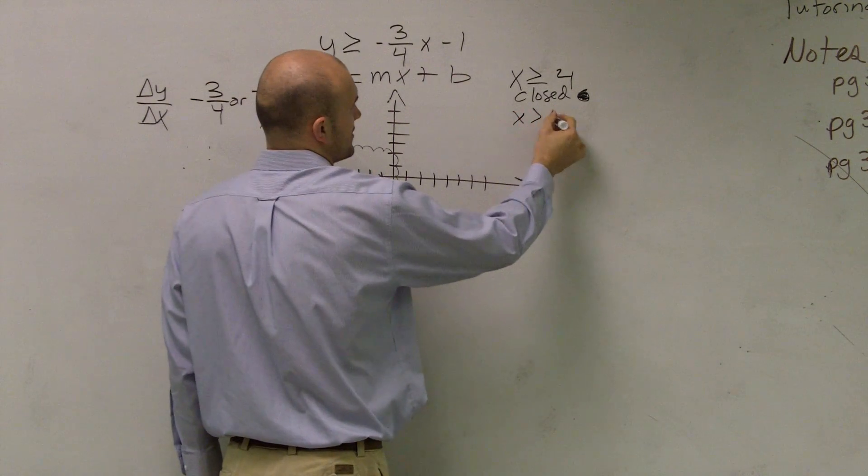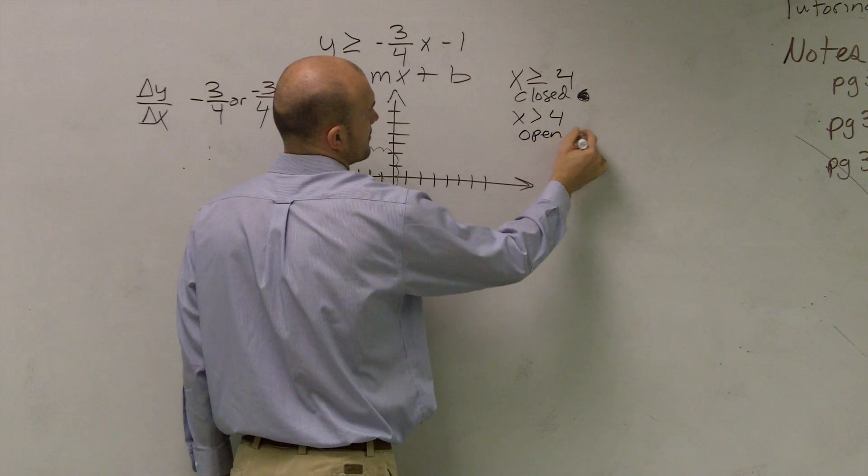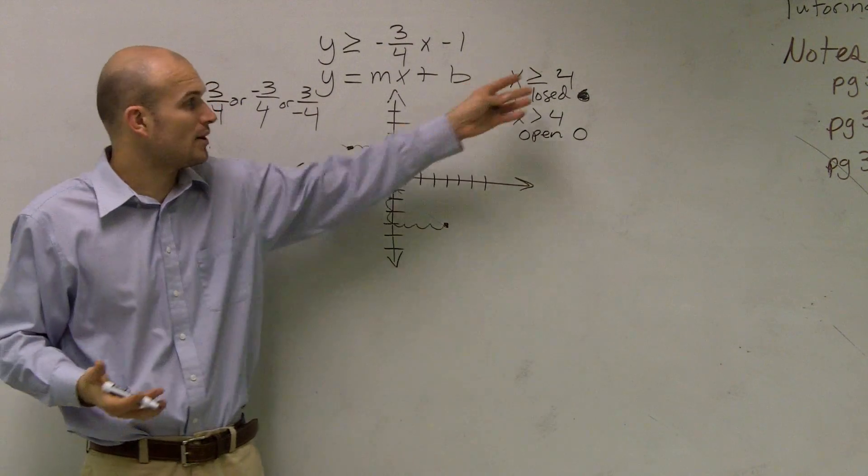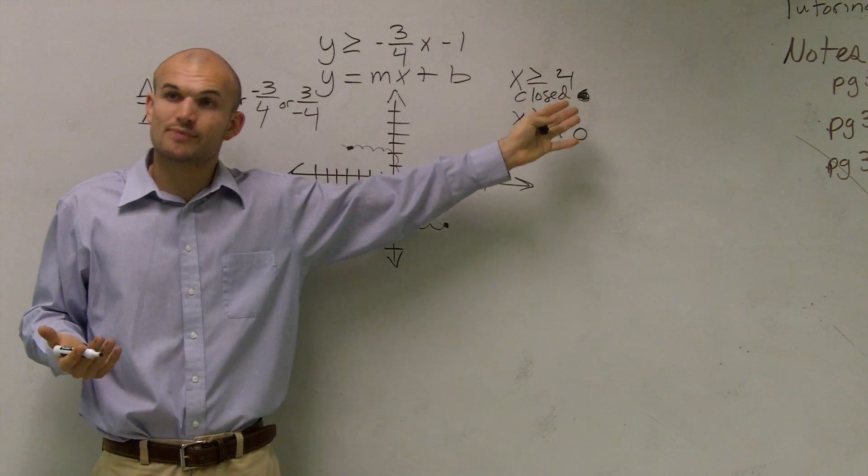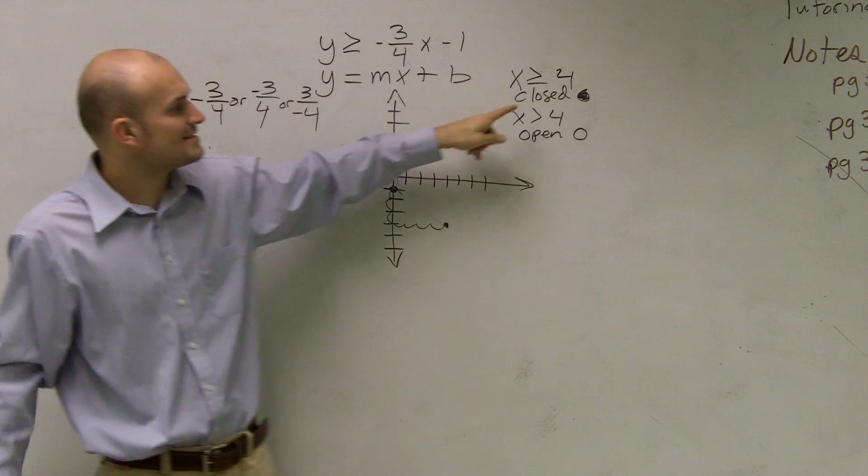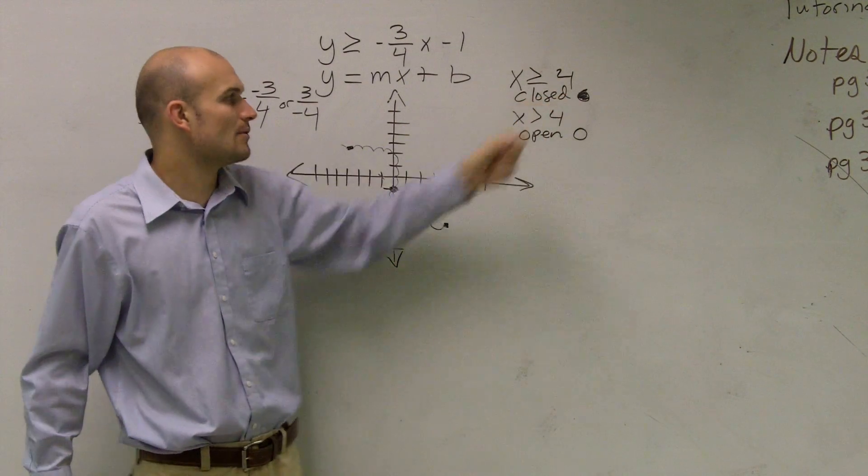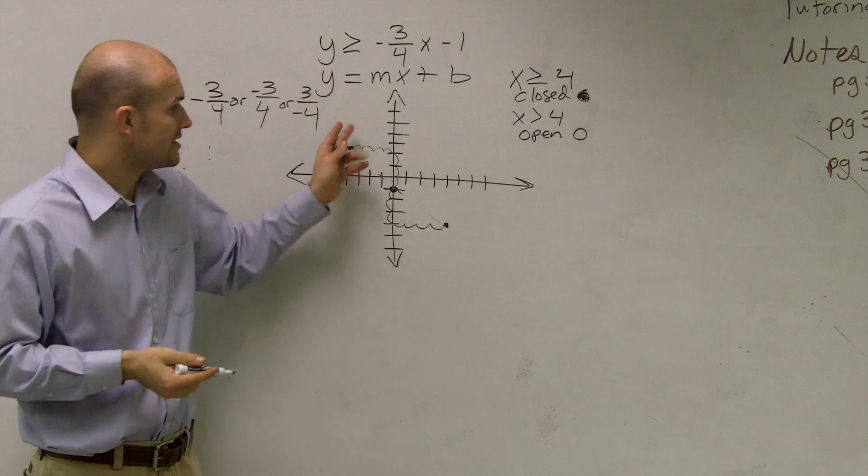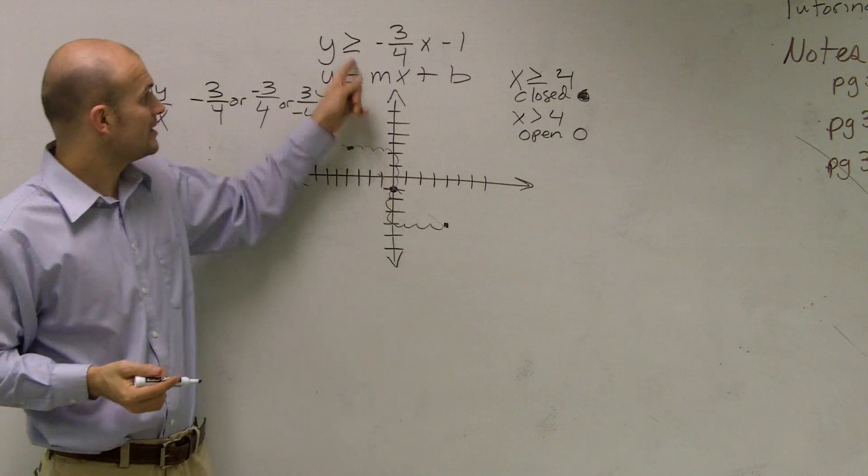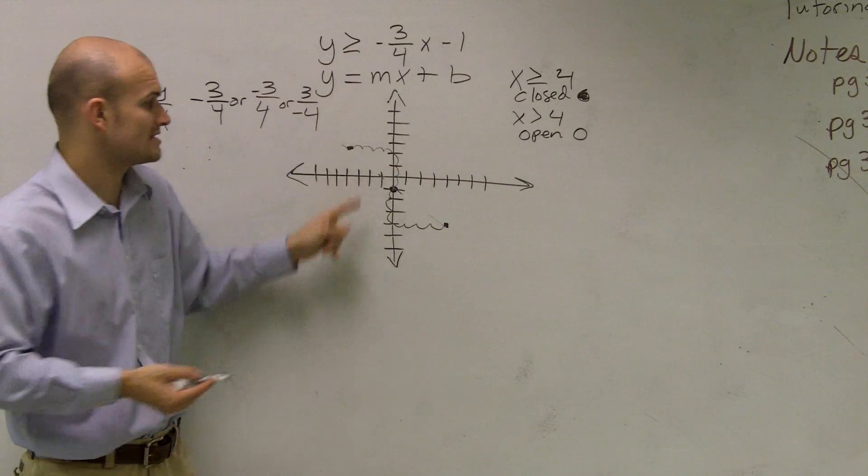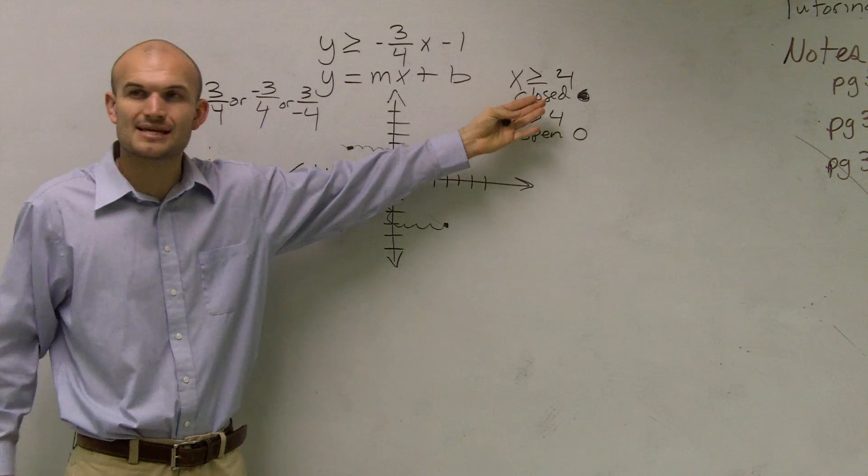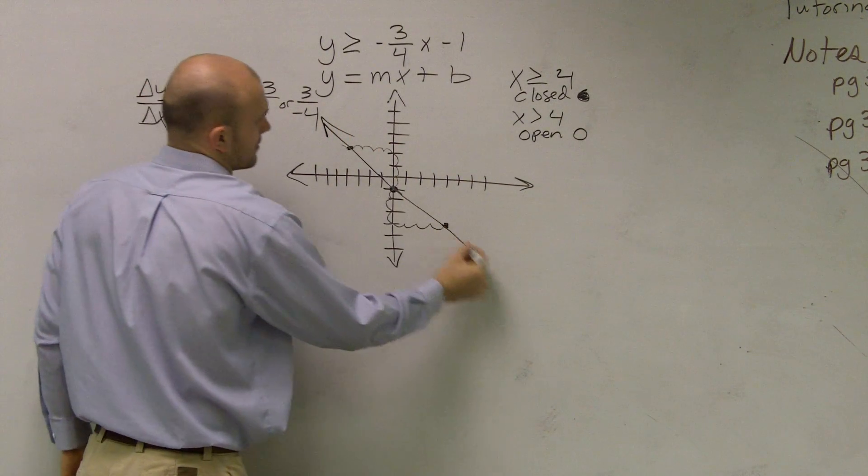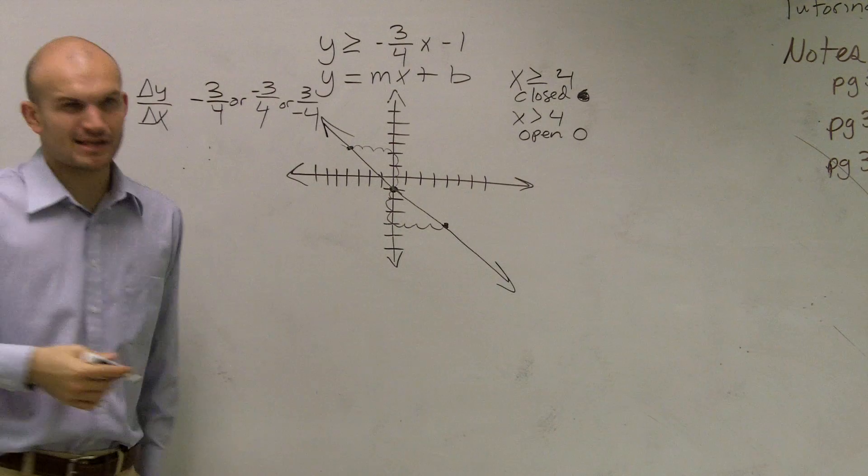And if it was like x was greater than 4, it was an open dot. Well, ladies and gentlemen, we don't have a one variable inequality. We have two variables. So we're going to be graphing a line now. And instead of using a closed dot, now what we're going to use is called solid. And instead of doing an open dot, it's going to be a dotted line. Now since this line is greater than or equal to, it's just going to be a solid line.